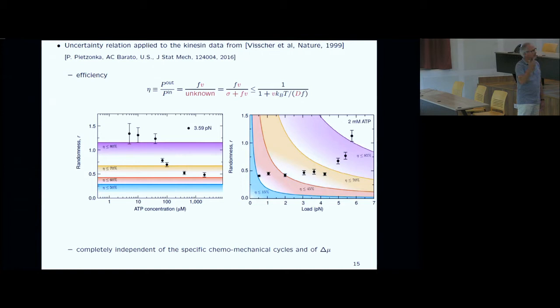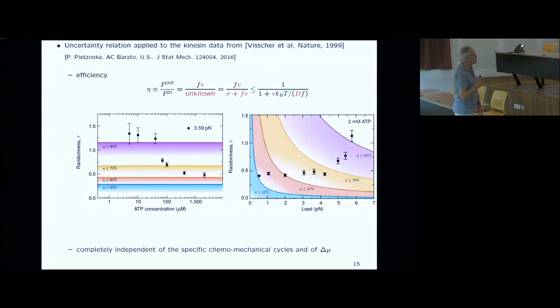All quantities on the right-hand side are measurable. Taking old data and plotting this bound, the ATP concentration drops out, giving straight lines. For a given experimental data point you can say: under these conditions, this motor is thermodynamically efficient at most 70%. Perhaps less — it's a bound. This is the first result where someone tried to infer the efficiency of a molecular motor based solely on experimental data, without any additional input about how the motor works biochemically.